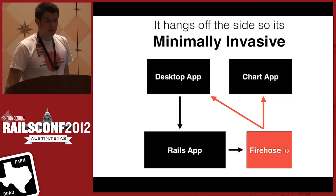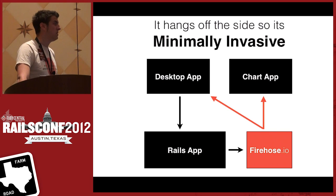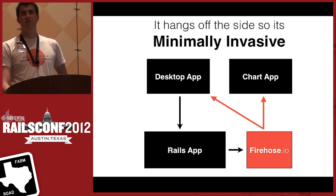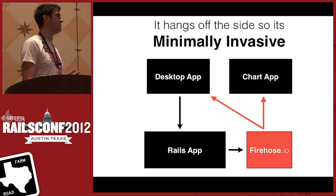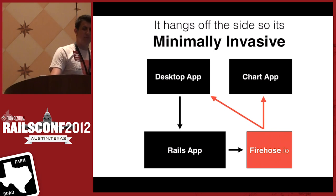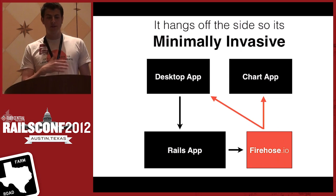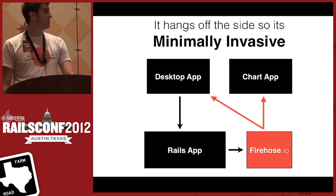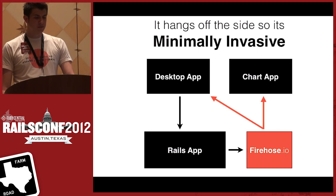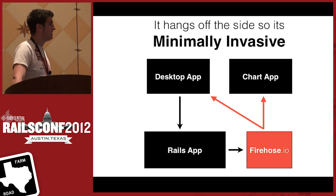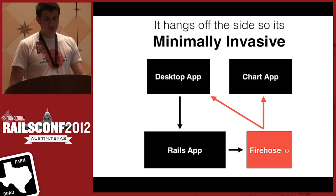One of the really nice things about Firehose is that it's minimally invasive. When you end up with a giant Rails application, it's not giant because it's bad — it's probably giant because you've got users who want features. What's nice about this approach is that you can keep your existing code assets without throwing them out. It's really just setting up the right hooks inside of ActiveRecord, which could probably be extracted into a plugin, and then incorporating the client in your web applications to subscribe to these URLs.